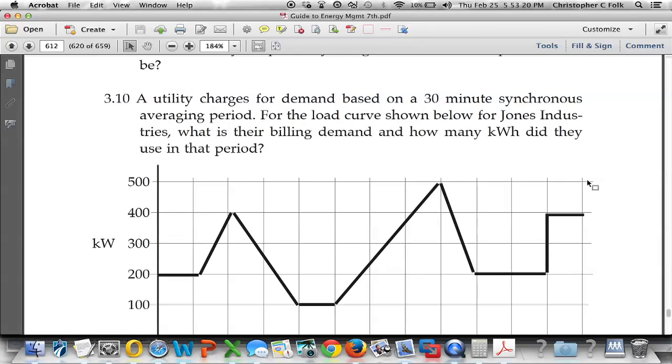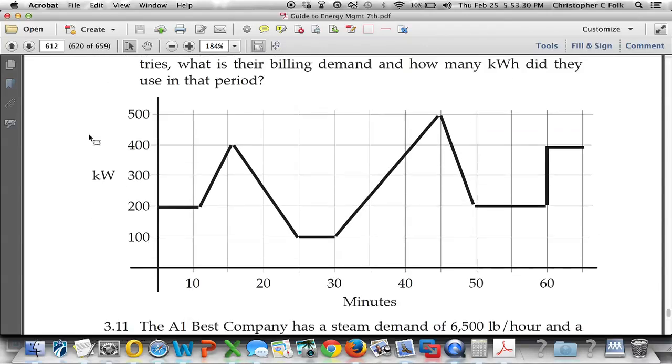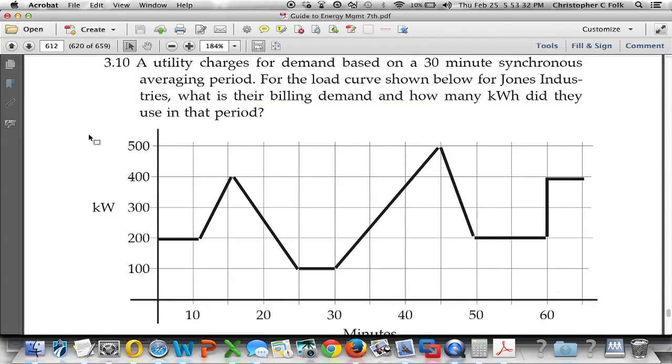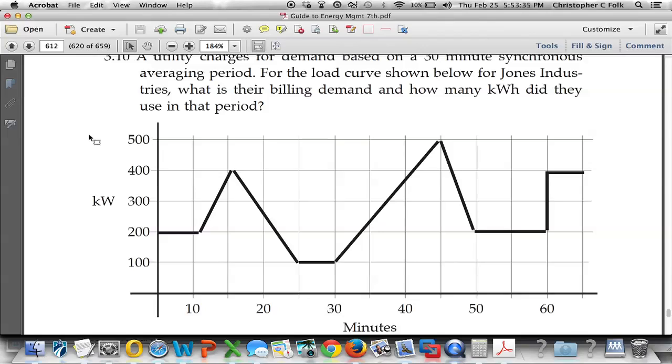Utility charges for demand based on 30-minute synchronous averaging period. So this is the problem that they give us. And they're showing us a load curve for the Jones Industries Corporation. And they want to know what the billing demand is. And they also want to know how many kilowatt hours did they use for the period that's shown.